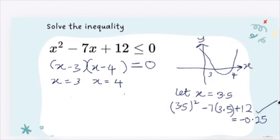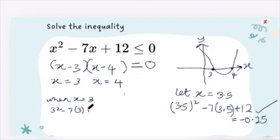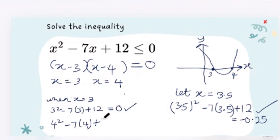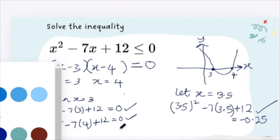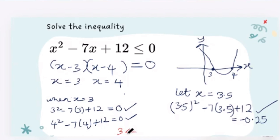That is less than zero, so that works. Because it says less than or equal to, I also test the boundaries. When x equals three: 3 squared minus 7 times 3 plus 12 equals zero — that works. For x equals four: 4 squared minus 7 times 4 plus 12 equals zero — that works too. So our final answer is 3 ≤ x ≤ 4.